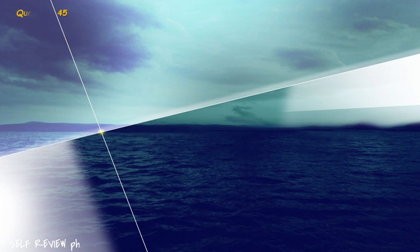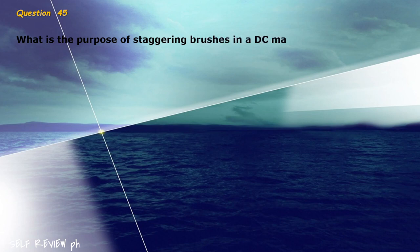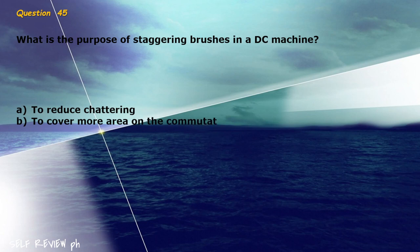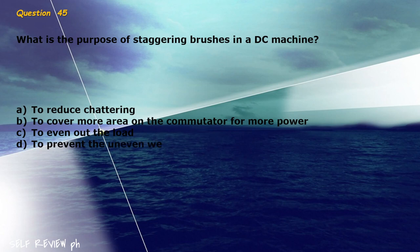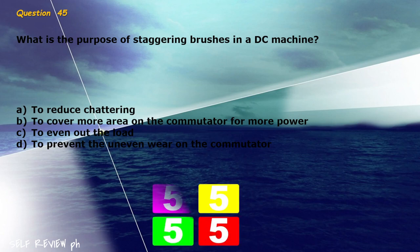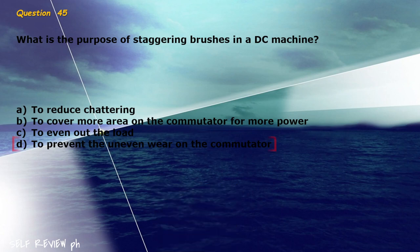Question 45: What is the purpose of staggering brushes in a DC machine? A) to reduce chattering, B) to cover more area on the commutator for more power, C) to even out the load, D) to prevent the uneven wear on the commutator. The correct answer is letter D, to prevent the uneven wear on the commutator.